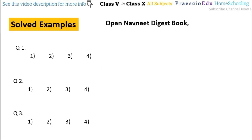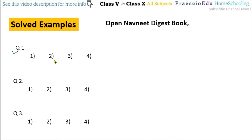Before the exercise, we are going to make an overview of the solved examples. There are a total of 3 examples. Question number 1 is on page number 316 in the solved examples: which number will come in the place of the question mark in the given pattern?